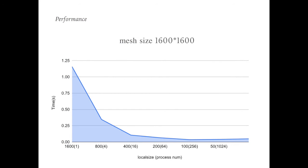The last important thing, let's check the performance of the parallel program with different configurations. In this figure, the mesh size is 1600 times 1600, and the x-axis represents the number of the local size. The number in the parentheses represents the number of the MPI process. The y-axis represents the time spent on the execution. There is an obvious decrease when we increase the process number from 1 to 4, and the time also decreases from around 1 second to 0.1 second.